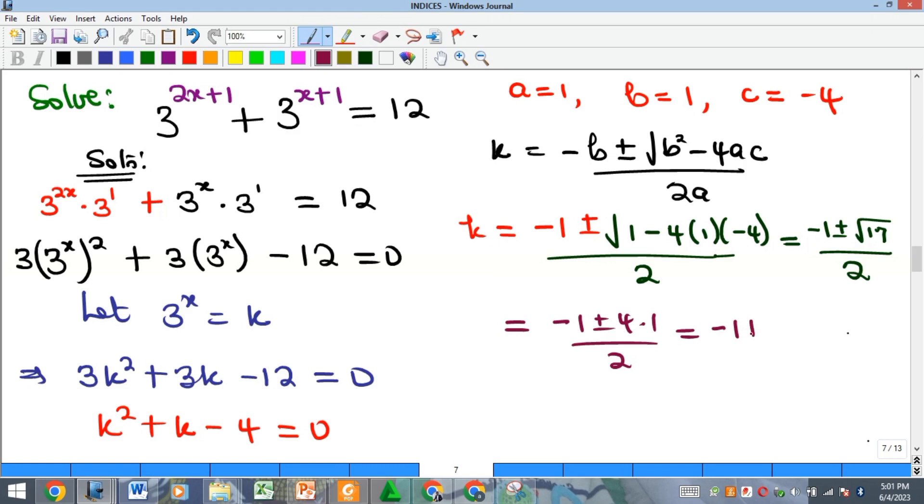So if we split this into the two options, we are going to have negative 1 plus 4.1 all over 2, or negative 1 minus 4.1 all over 2. But of course, like we said, or like we know, since our 3 raised to the power of x is equal to k, so it means that k cannot be negative. But of course the second option is going to be negative, so we can't take that.